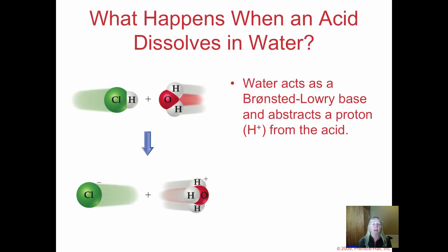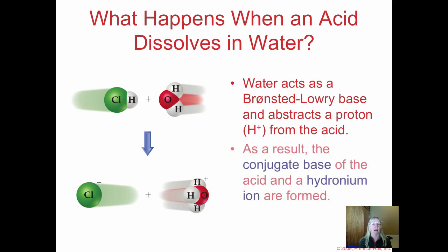When an acid such as hydrogen chloride dissolves in water, the water, with its unshared pairs of electrons, strongly abstracts or pulls off the hydrogen ion, forming what we call a hydronium ion. The substance left behind when an acid donates a hydrogen ion is called its conjugate base. Many textbooks use the terms hydronium ion and hydrogen ion interchangeably, so get comfortable with that.